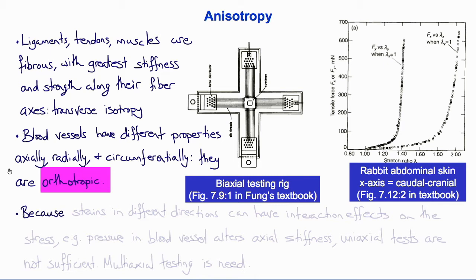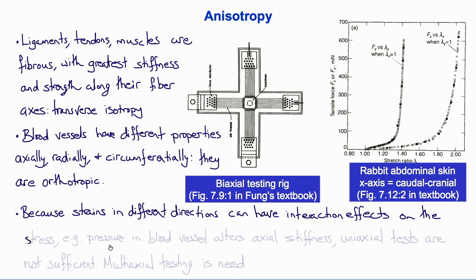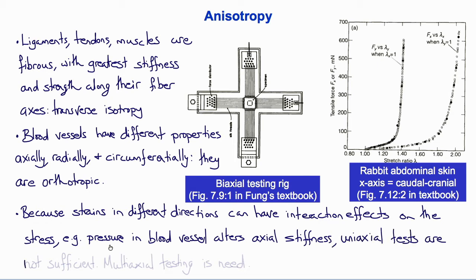Because the stress-strain relationship is non-linear, strains in different directions can often have interaction effects on the stress. For example, increasing the pressure in a blood vessel alters the axial stiffness. Therefore, uniaxial tests aren't enough to characterize the properties of non-linear anisotropic materials. We actually have to simultaneously load both directions and measure the properties at the same time, which requires what's called multi-axial testing.